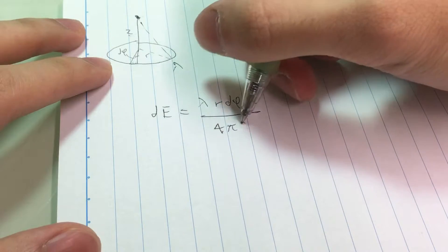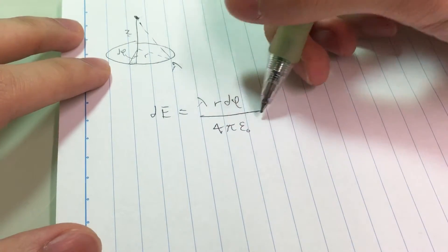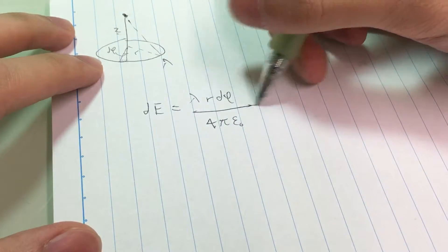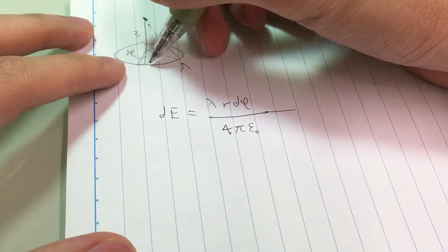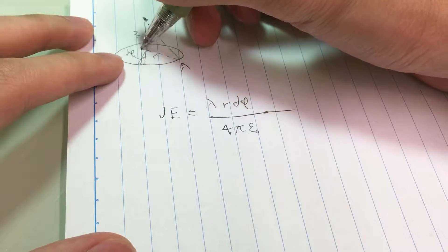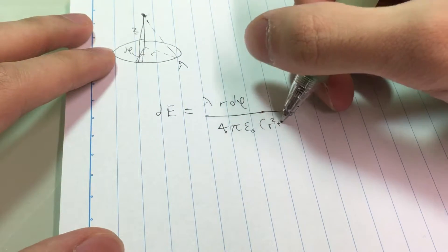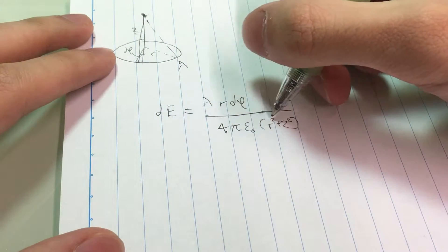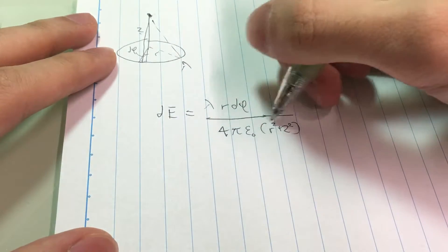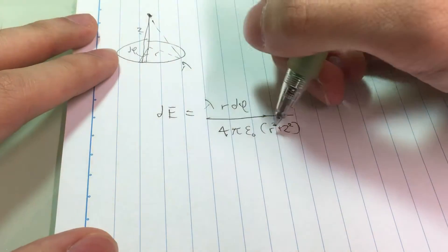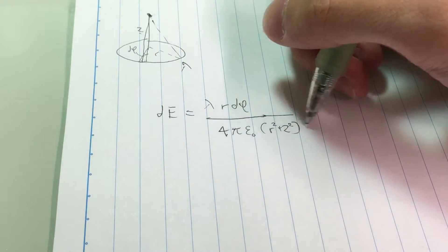All we have to do is just use Coulomb's law. So we multiply it by this constant and divide it by the distance. What's the distance? This distance is just r squared plus z squared. The distance is the square root of this, but in Coulomb's law we have to square the distance.